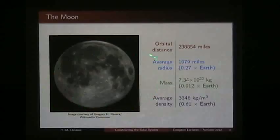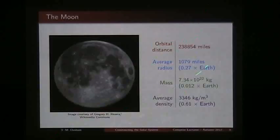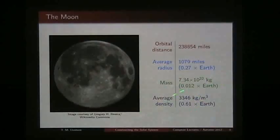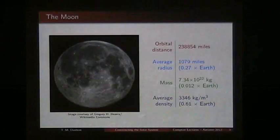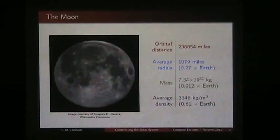So the moon — you're all familiar with it. This is obviously a full moon, and you can see the whole surface. The average orbit distance of the moon is around 238,000 miles from Earth. Its average radius is around 1,000 miles, which is around a quarter of the radius of the Earth. Its mass is around one-eightieth of the mass of the Earth. And its average density is around 3,300 kilograms per cubic meter, compared to the Earth's roughly 5,500. So it's less dense than the Earth — around 60% of the density of the Earth — and that's an important number we'll come back to.